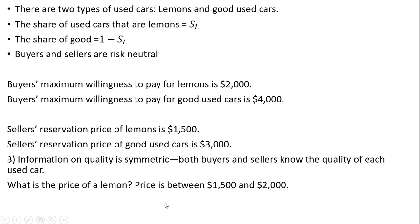What is the price of a lemon? The price will be between the buyers' maximum willingness to pay and the sellers' reservation price, between $1,500 and $2,000. What is the price of a good used car? Good used cars will be sold in this market. Since information on the quality of cars is known on both sides of the market, the price will be between buyers' maximum willingness to pay and sellers' reservation price, between $3,000 and $4,000.